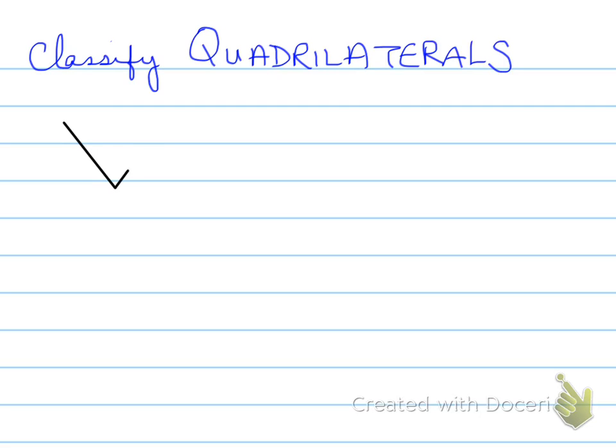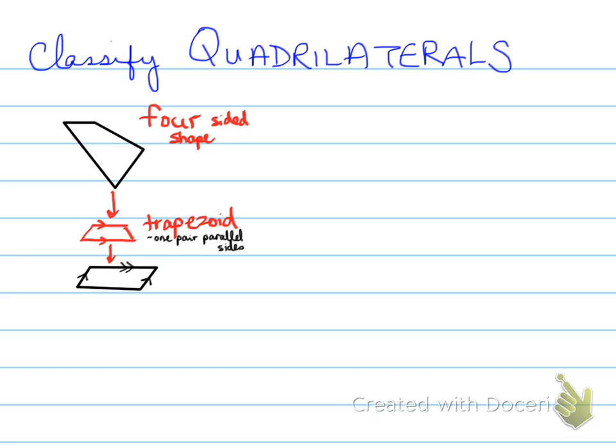Something else that you have to keep in mind when you're asked to classify, is you'll be asked on the test to classify quadrilaterals. So, to do that, you need to look at a four-sided shape. We need to classify a four-sided shape, the quadrilateral, into possibly a trapezoid, where you have one pair of parallel sides.